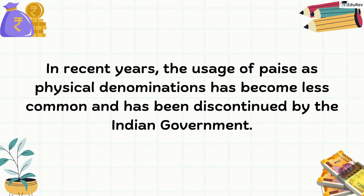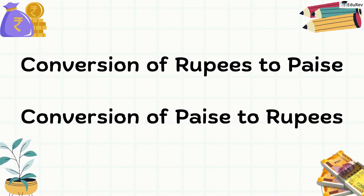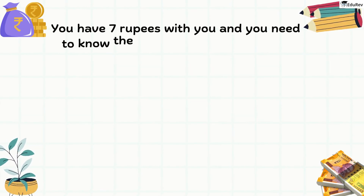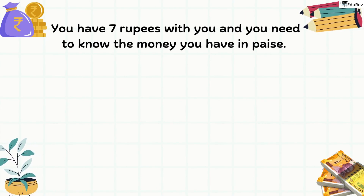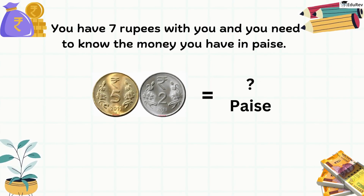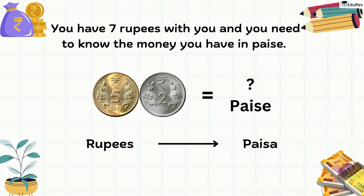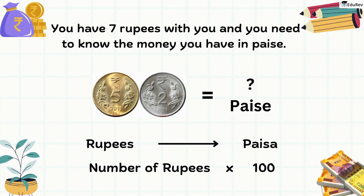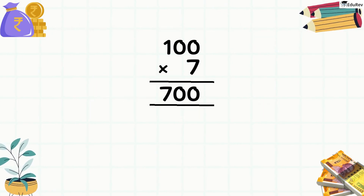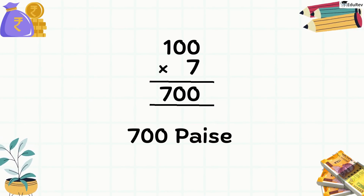Now children, we will learn how to convert rupees to paise and paise to rupees. Let's say you have 7 rupees with you and you need to know the money you have in paise. To convert rupees to paise, you multiply the number of rupees by 100. So you simply multiply 7 with 100 — it means you have 700 paise.